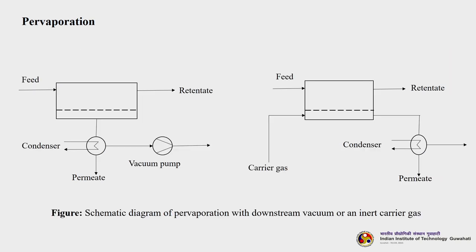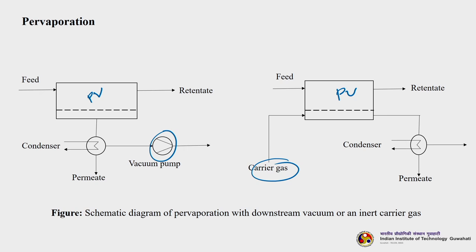This low vapor pressure can be achieved by employing a carrier gas or by using a vacuum pump. The partial downstream pressure must be lower than the saturation pressure so that vaporization takes place. In the first scheme, permeate vaporization is achieved using a vacuum pump - the permeate is drawn, condensed, and done by vacuum. In the second case, low vapor pressure is maintained using a carrier gas fed to the downstream side, and then the permeate is condensed and drawn.